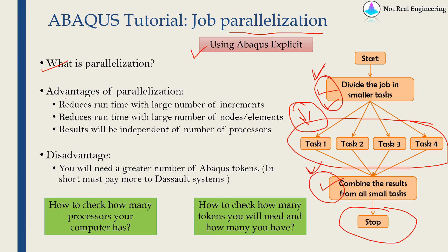The advantage of parallelization can only be seen when you have a huge job. For example, if you have a job with a large number of increments, or a large number of nodes or elements, you can definitely save a lot of time. Finally, the beauty of this is that results will not change — whether you run it on one processor or on eight processors, the results will be the same. Therefore, whenever you have a big job, always use Abaqus parallelization.